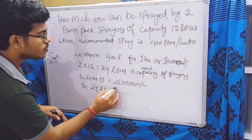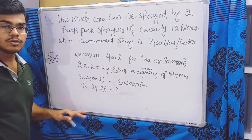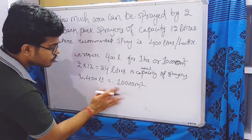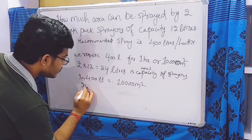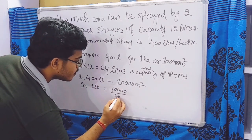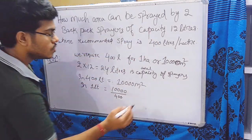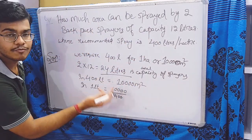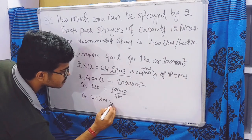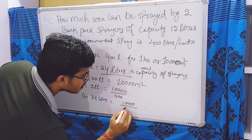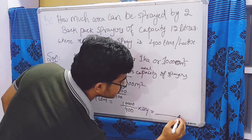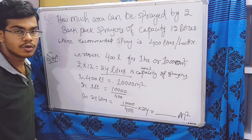Using the unitary method: if 400 liters covers 10,000 square meters, then 1 liter covers 10,000 ÷ 400 square meters. Our total capacity is 24 liters, so in 24 liters we can spray 10,000 ÷ 400 × 24 square meters. This gives us the area in square meters.